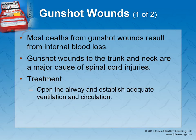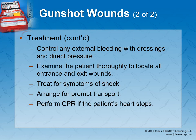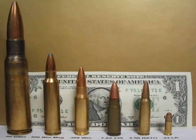For gunshot wounds, control external bleeding with dressings, direct pressure, or tourniquet if needed. Examine the patient thoroughly to locate all entrance and exit wounds — bullets can bounce around inside the body, so an entry wound on the chest could exit near the hip. If someone's been shot, do a thorough examination because you never know where the bullet will come out. Treat for shock and manage ABCs and blood loss, but the rest happens at the hospital.